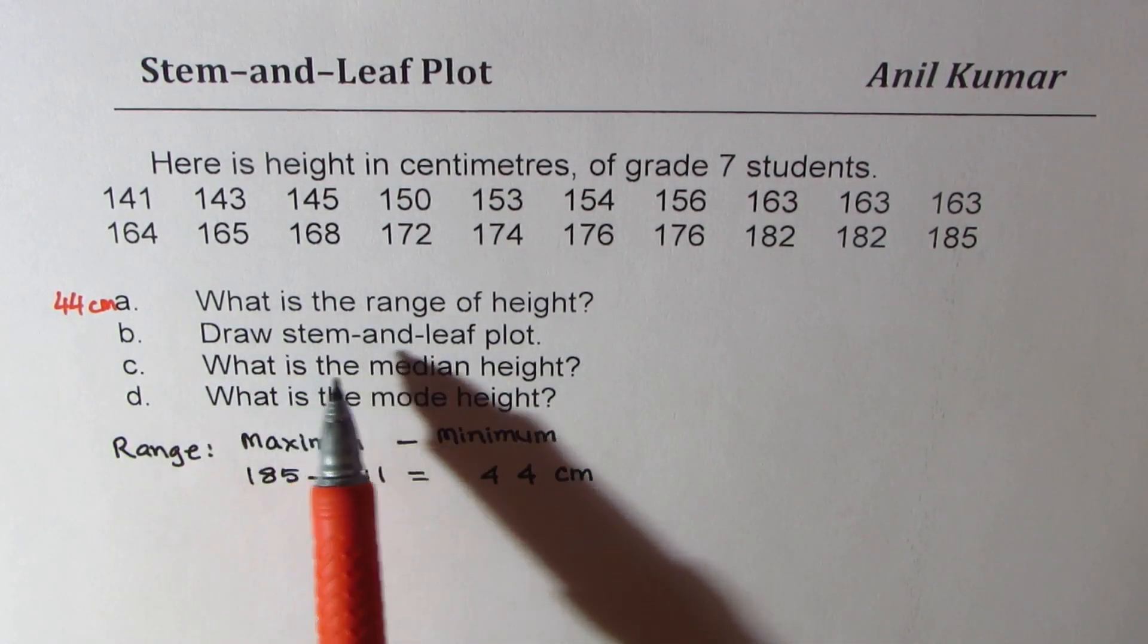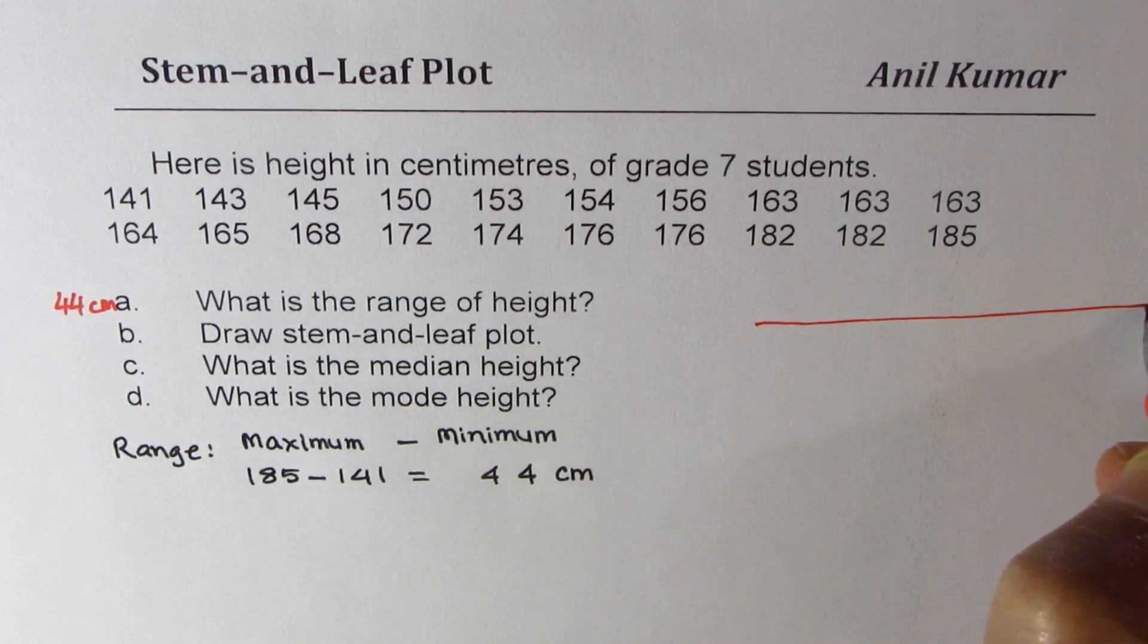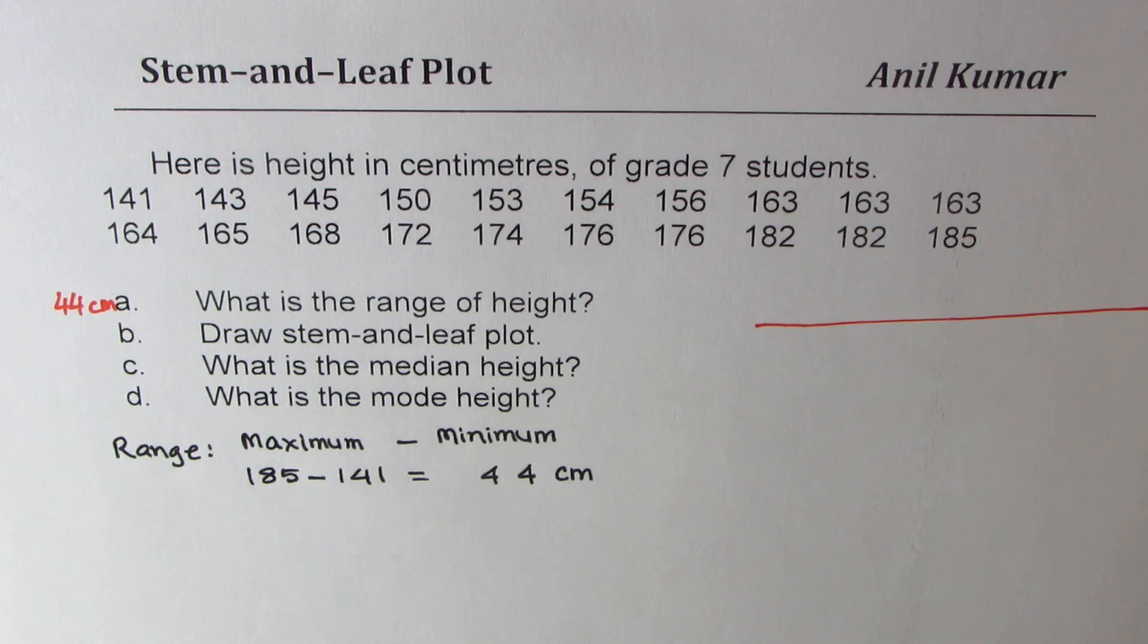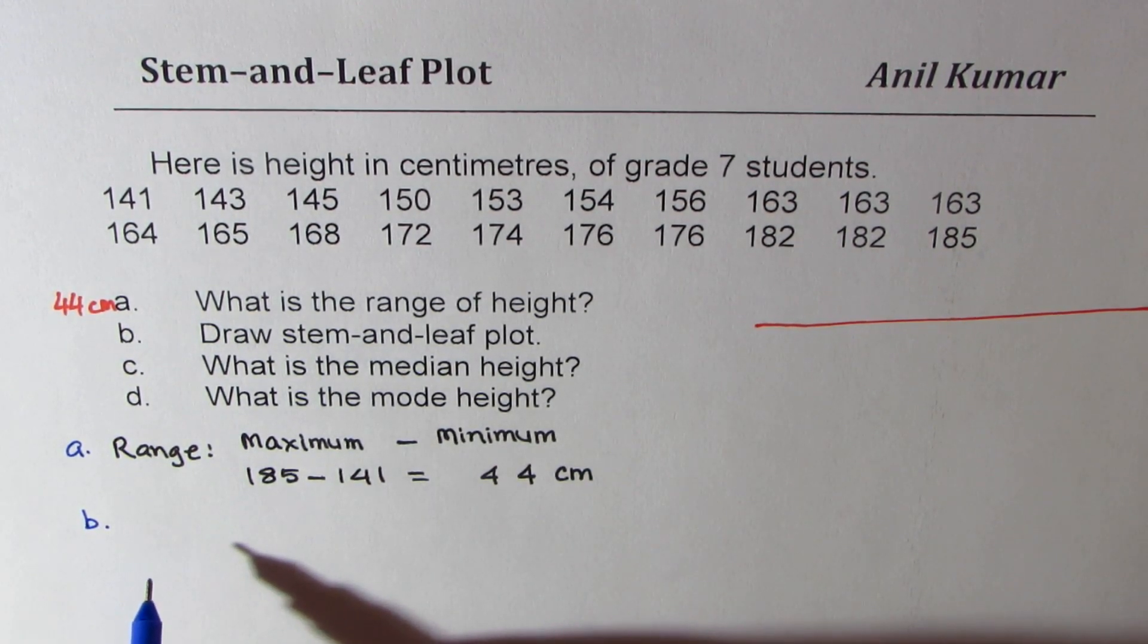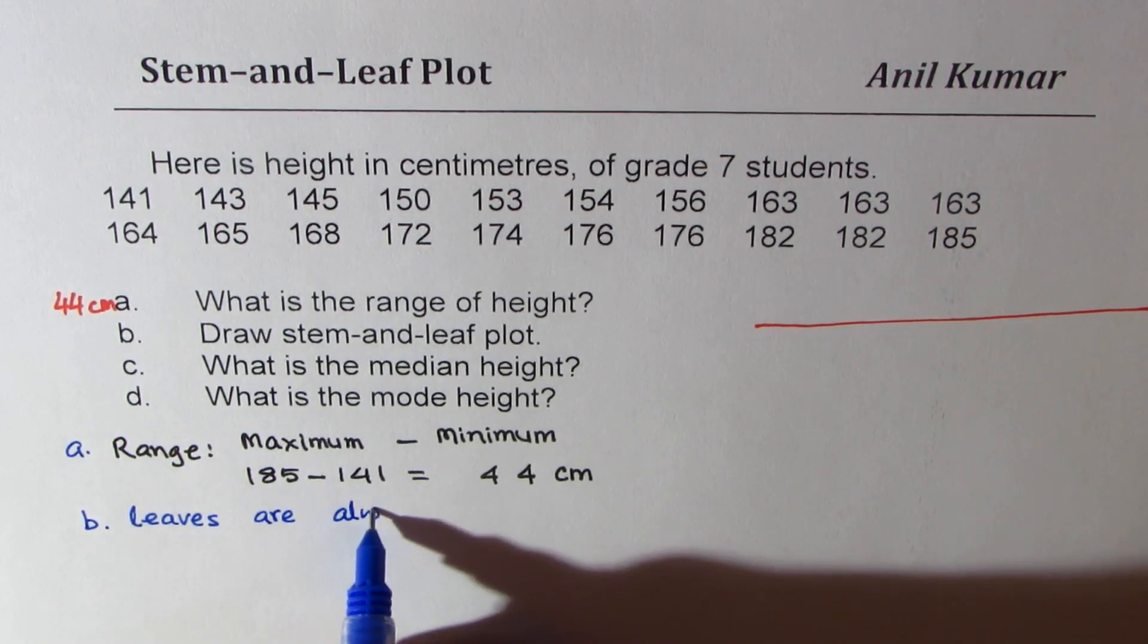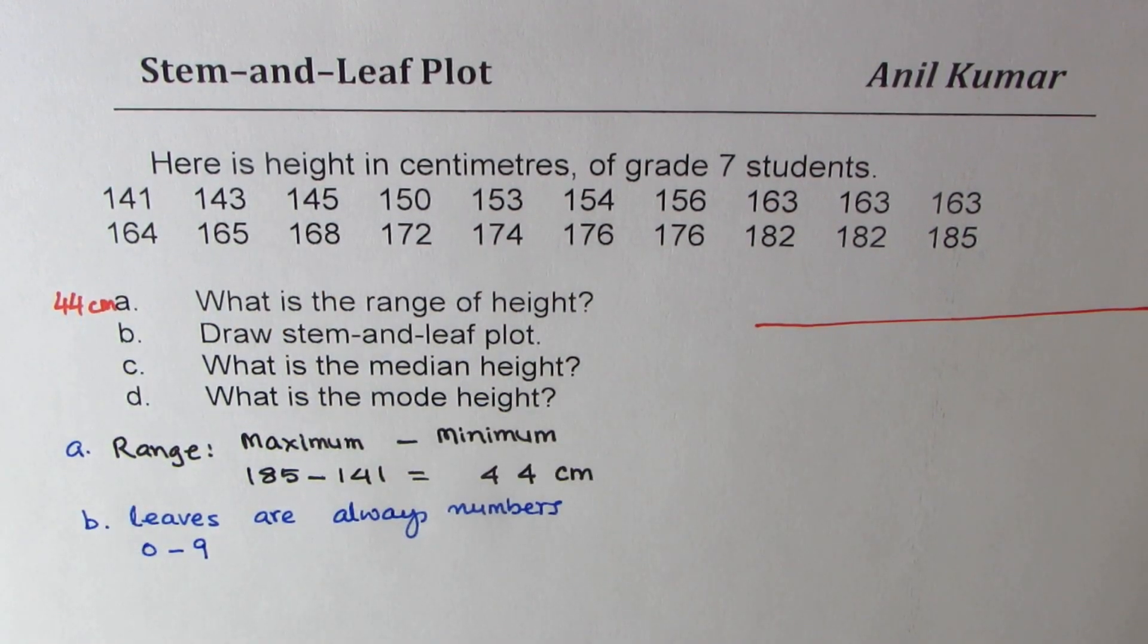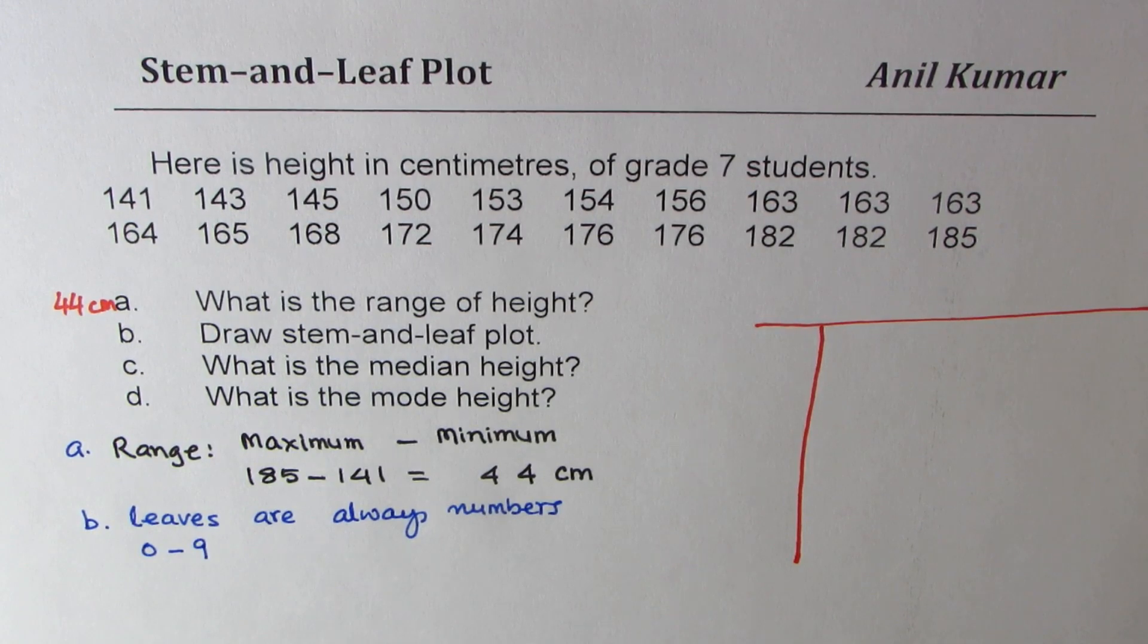B, draw stem and leaf plot. When you draw a stem and leaf plot, let me sketch it here. What you really need to do is make a bifurcation for writing. Now we have three digits. In stem and leaf, what you need to remember is that the leaves are always numbers 0 to 9. Since we have three digits, the stem will be two digits.